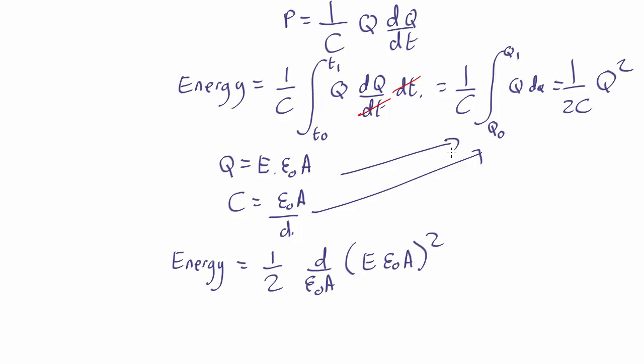And simplifying we find out that that comes out as 1 over 2 epsilon naught then we've got D times A which is just the volume inside the capacitor, the cross-section area times the thickness times E squared.